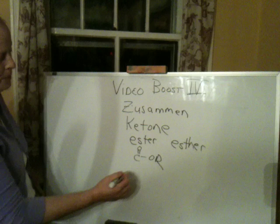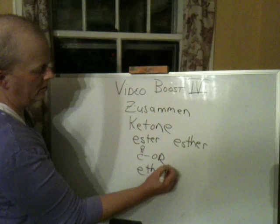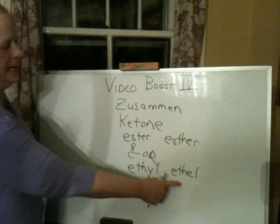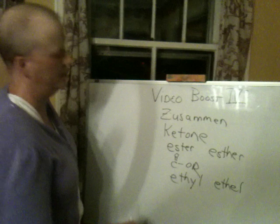The other word people misspell is 'ethyl'. Ethyl is spelled with a Y-L at the end, and sometimes people spell it like the name Ethel. Again, it would be great to name our kids Ethyl and Ester as a chemist. People misspell this like 10 or 15% of the time. So that's a little spelling lesson.